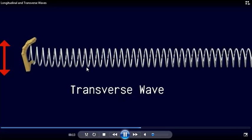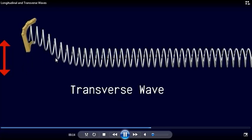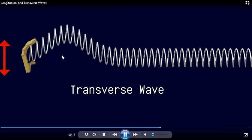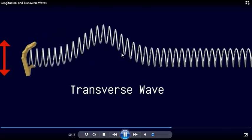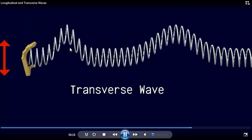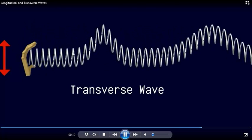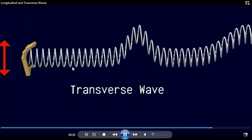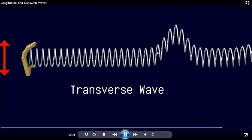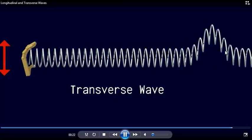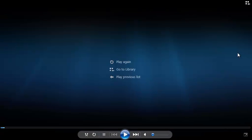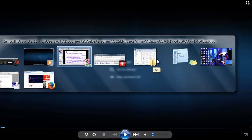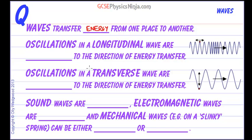Whereas a transverse wave — the pulse is going along like this, but we can see that the coils are moving perpendicular to the direction of the wave motion. Now these two are very important wave families to recognise.